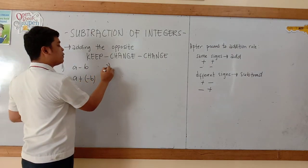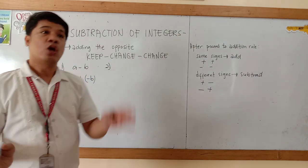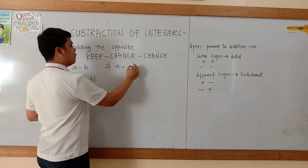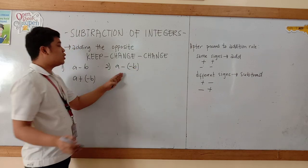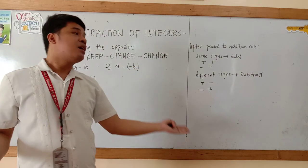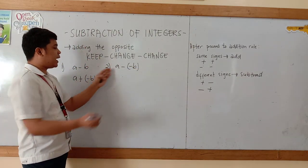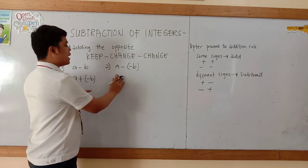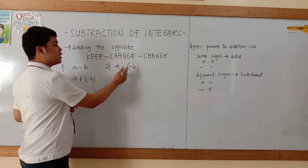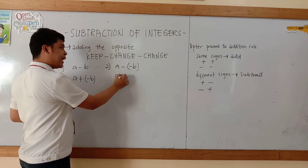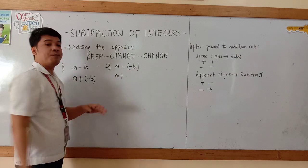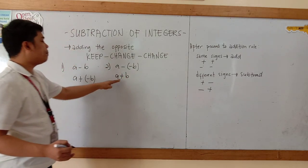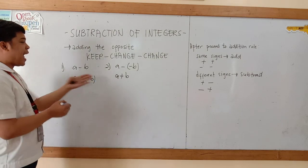Let's now have the second example, Maka Friendships, with letters also: A minus negative B. Let's keep letter A, and then this minus, let's change this into a plus sign. And then this negative B, change it to positive. So that will be positive A plus B as the answer.